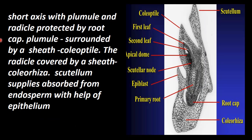In the structure, the short axis is with the plumule, where it becomes the shoot apex. This plumule is surrounded by a sheath of cells called the coleoptile.